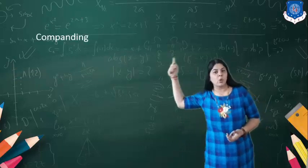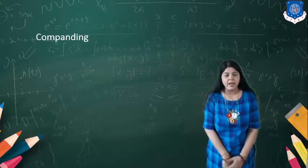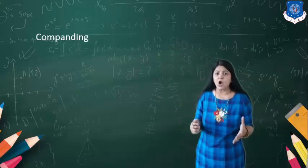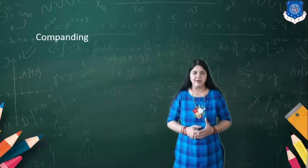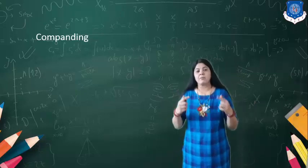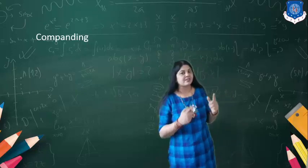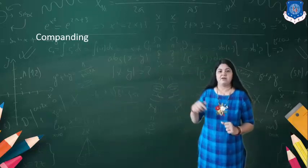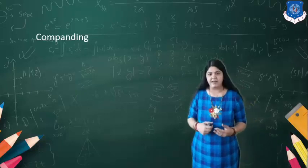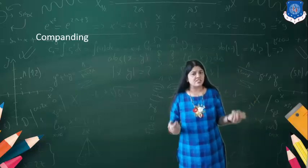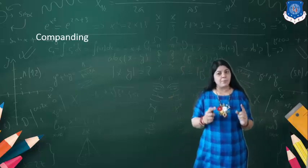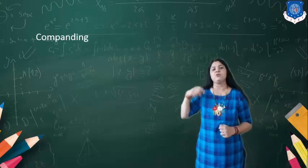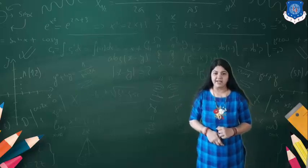So now we are going to learn about companding. The word companding is made up of two different words: compression, which is done at the transmitting end, and expanding, which means expanding of the signal at the receiving end. So compression plus expanding is referred to as companding.